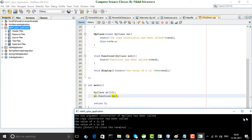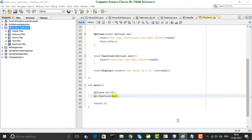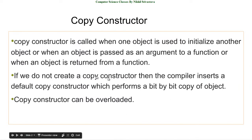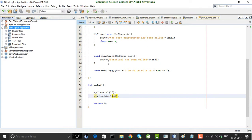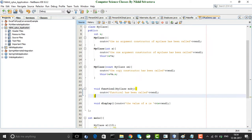So, to summarize: the copy constructor is called in two cases. First, when one object is used to initialize another object — as in MyClass m2 = m1. Second, when an object is passed as an argument to a function — as we verified in this case, the copy constructor is also called.